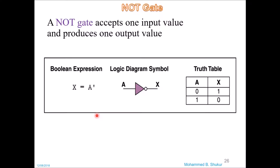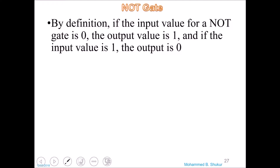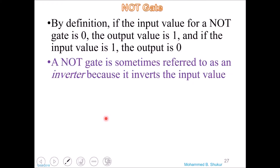Logic 0 means there is no voltage — 0 volts — and logic 1 means 5 volts, or maybe 3 volts. When I have 0 volts at the input, I get 5 volts at the output, and when I have logic 1 (5 volts) at the input, I get 0 volts at the output. By definition, if the input value for a NOT gate is 0 the output is 1, and vice versa. Sometimes we call the NOT gate an inverter.